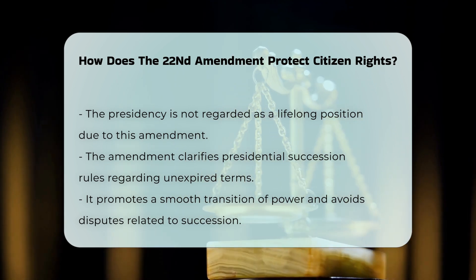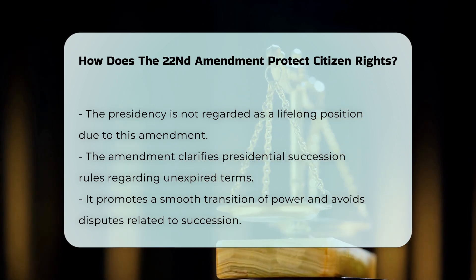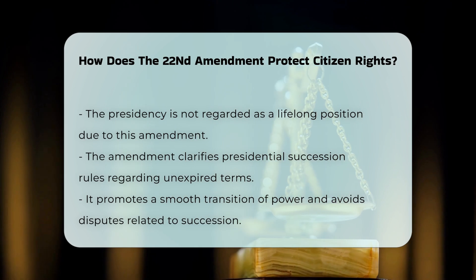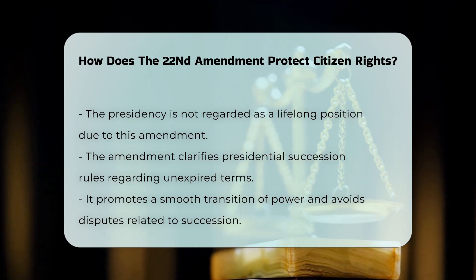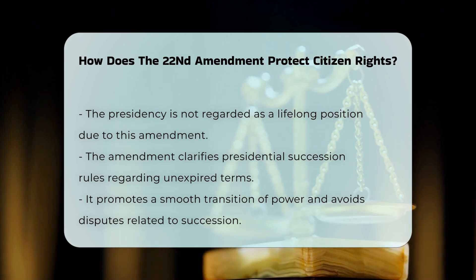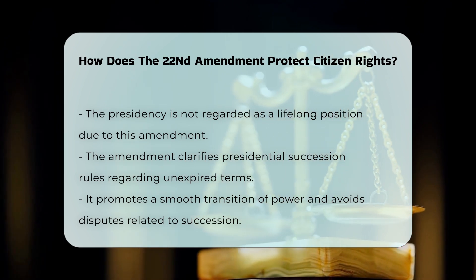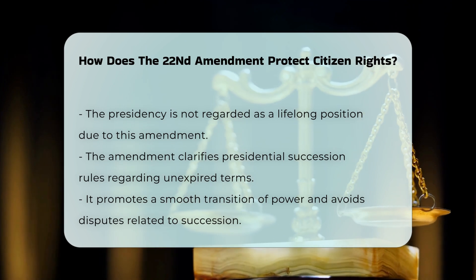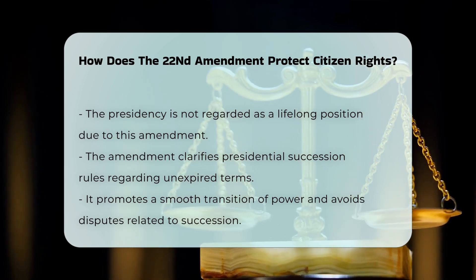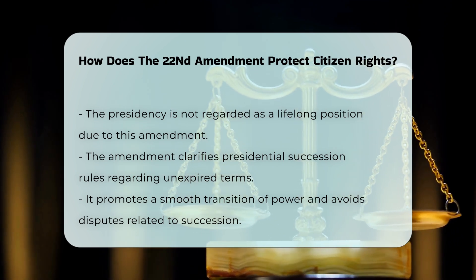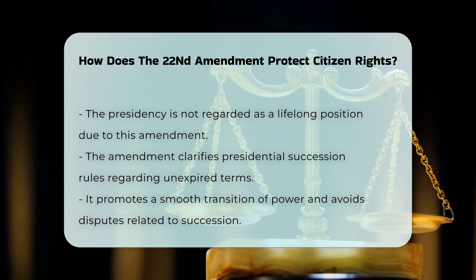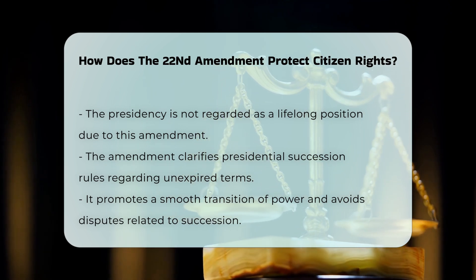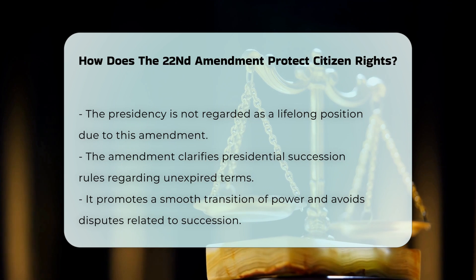Clarifying succession rules. The 22nd Amendment also clarifies the rules for presidential succession, specifying that a person who fills an unexpired presidential term lasting more than two years is prohibited from being elected president more than once. This clarity helps in avoiding potential disputes and ensures a smooth transition of power.